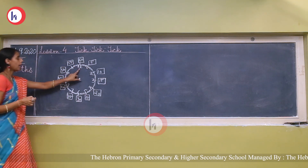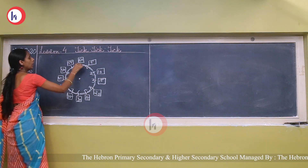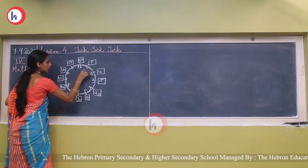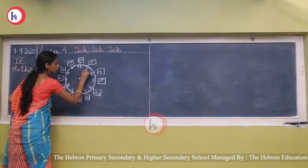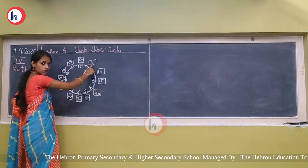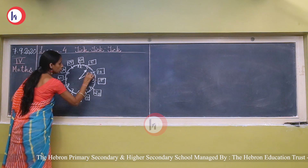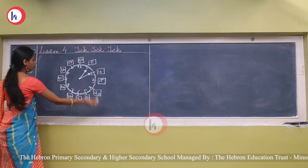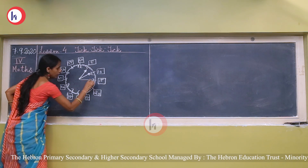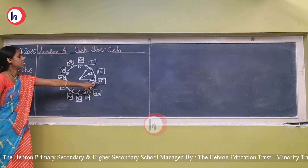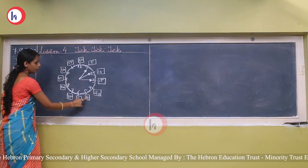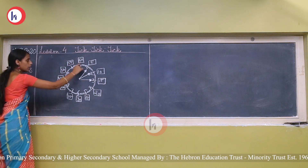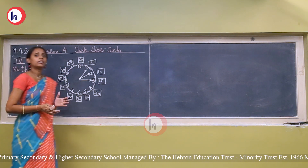When the minute hand is pointing to 12, it is the top of the hour. So: if the minute hand is pointing to 1, it means 5 minutes; pointing to 2 means 10 minutes; on 3 means 15 minutes; 5 fours are 20; 5 fives are 25; 5 sixes are 30; then 35, 40, 45, 50, 55, and 60. In that way, we can read the minute hand.